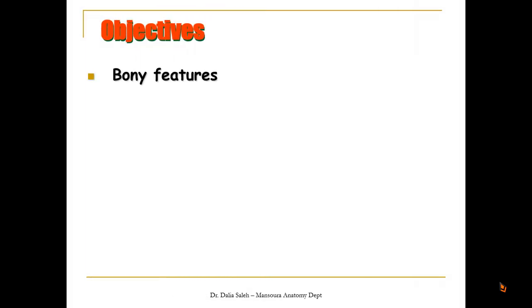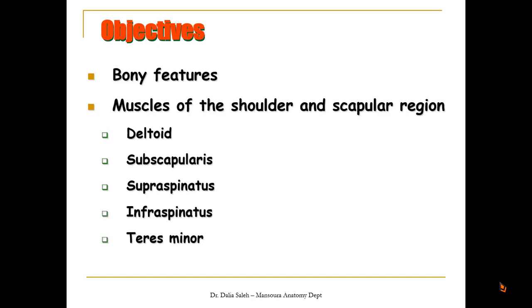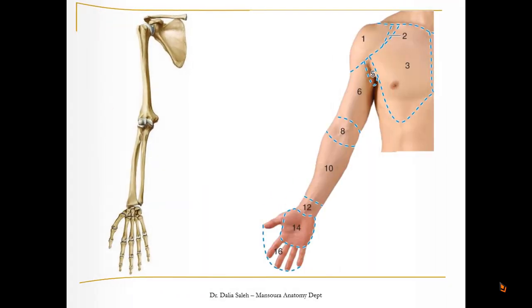To carry on with the upper limb lectures, I'm going to cover in this presentation the anatomy of the scapular region. I'm Dr. Dalia Saleh, professor and head of the anatomy department at Mansoura University, Egypt. The objectives of my presentation are: first, we will revise some bony features, and then we will talk about the muscles of the shoulder and scapular region. These include the deltoid, subscapularis, supraspinatus, infraspinatus, teres minor, and teres major muscles.